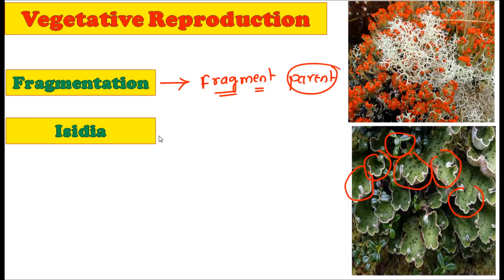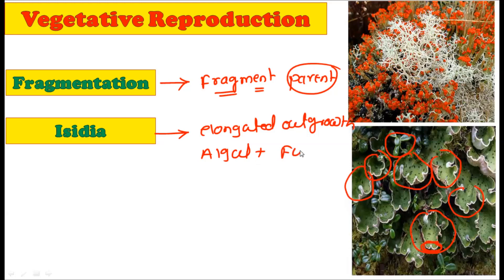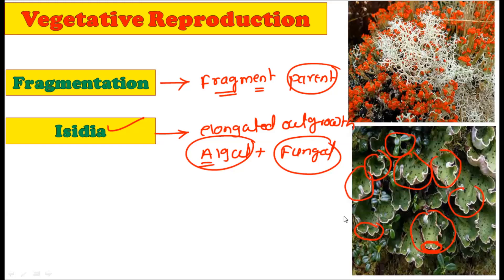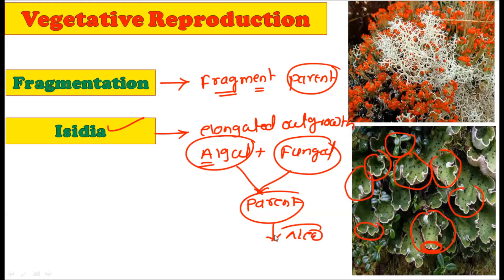The second method of vegetative reproduction is by isidia. Isidia are elongated outgrowths which can be found in the thallus of lichens. These elongated outgrowths contain both algal as well as the fungal partner — that is, the typical composition of the lichen with both partners present in the isidia. They are generally extensions of the thallus which increase the surface area for various purposes. When isidia got separated from the parent plant, they grow into new thalli.